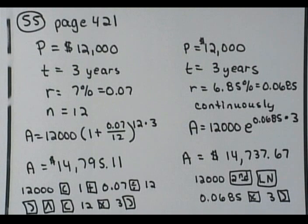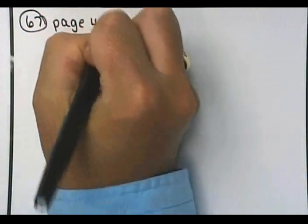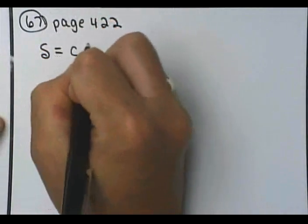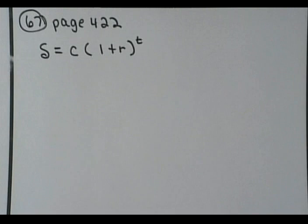Let's see, what else did you have to do here? Look at one like number 67 over there on page 422. Since we didn't get to do one of these, it says, if the inflation rate is 6%, how much will a house now worth $465,000 be worth in 10 years? And they're giving you the formula up here, where s equals c times (1 plus r) to the t.